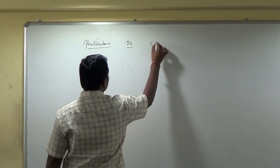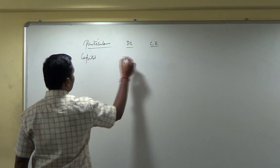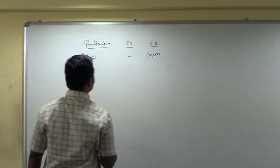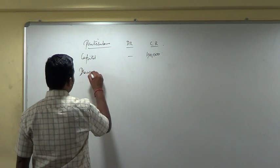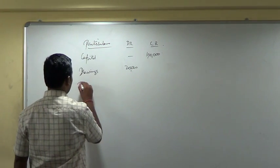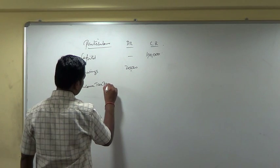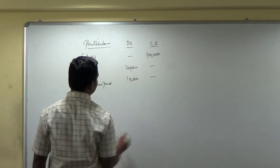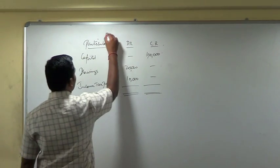Debit, credit, capital, credit balance 1 lakh, drawings, debit balance 20,000, income tax paid 10,000. Again, this is an extract of a trial balance.